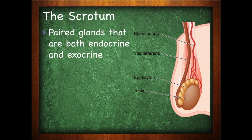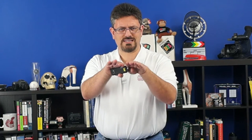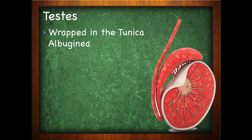The testes are going to produce sperm as well as testosterone. They are paired glands that both have an exocrine and an endocrine function. As far as shape, they're oval and slightly flattened, around 4 centimeters long and 2.5 centimeters wide. The left testis is usually suspended lower than the right to prevent compression when the male sits or brings their legs together. They are wrapped individually in the tunica albugina.